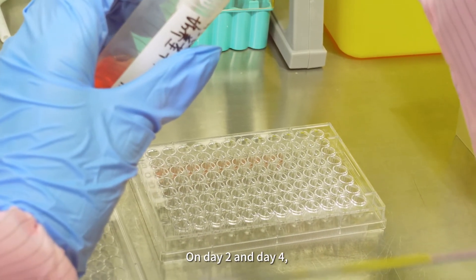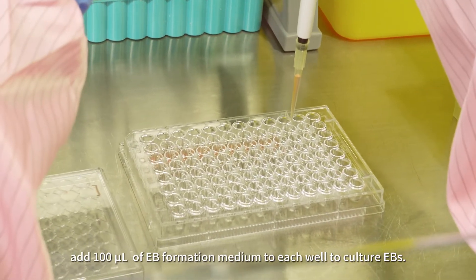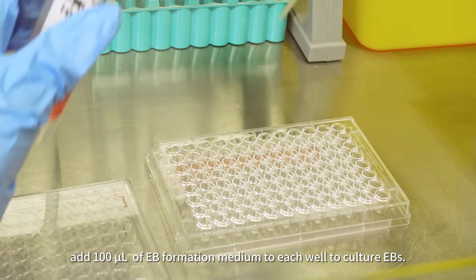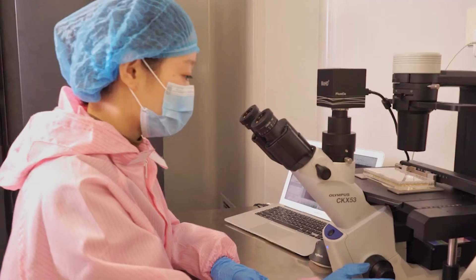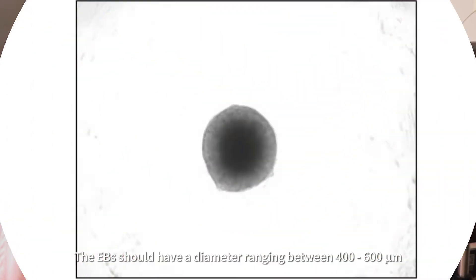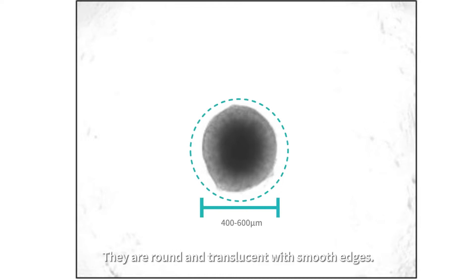On day 2 and day 4, add 100 microliters of EB formation medium to each well to culture EBs. Observe under a microscope. The EBs should have a diameter ranging between 400 to 600 microns. They are round and translucent with smooth edges.